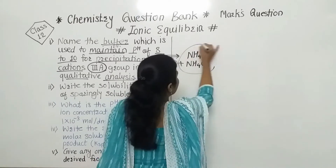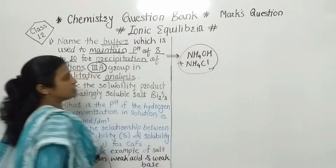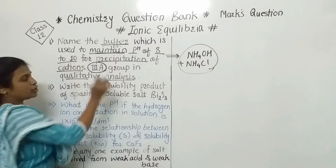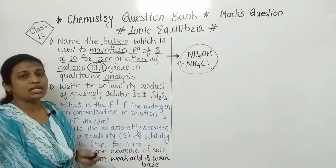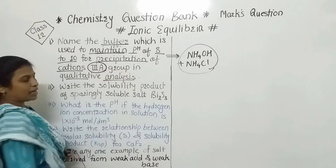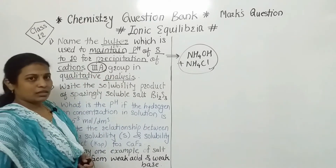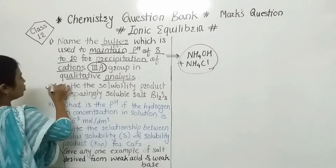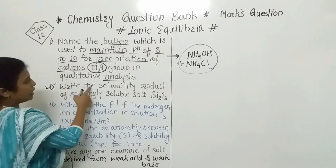This buffer is used to maintain the pH 8 to 10 for the precipitation of group 3A cations, and that is the answer. The second question is: write the solubility product.